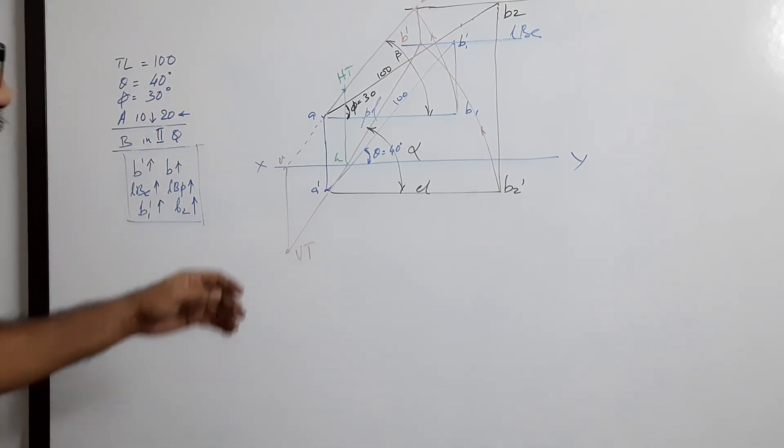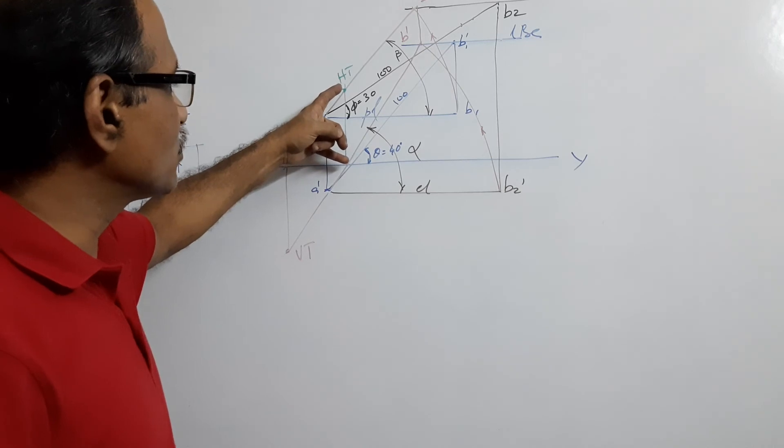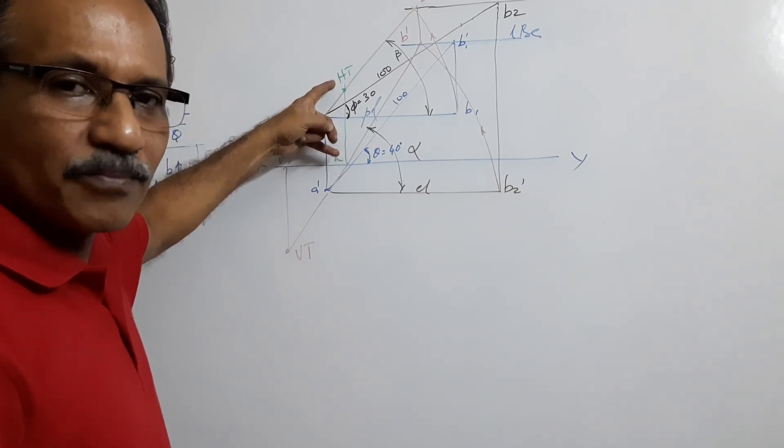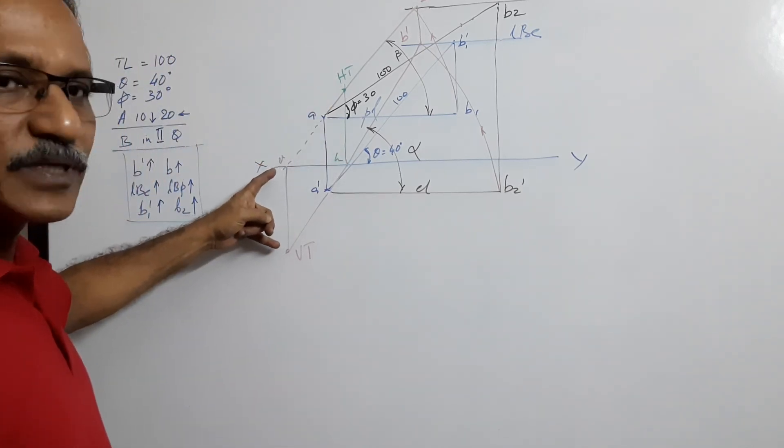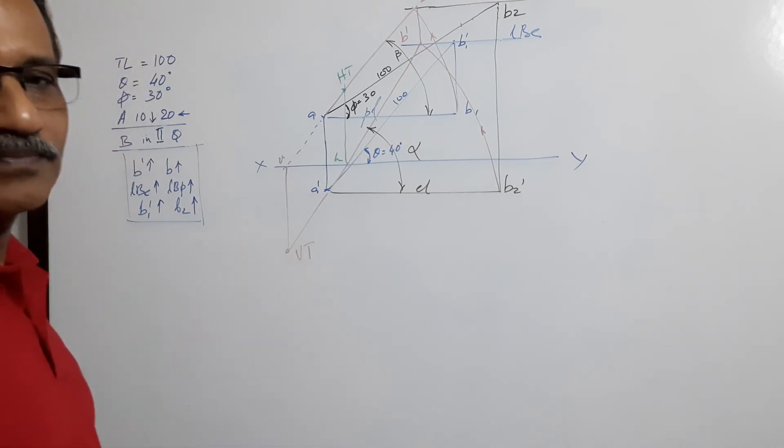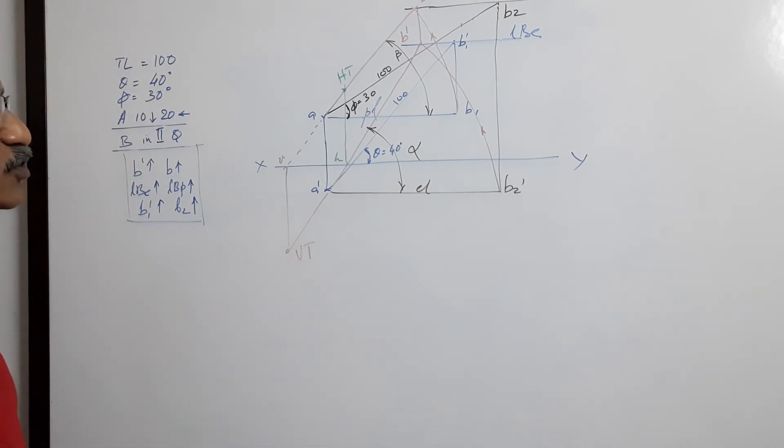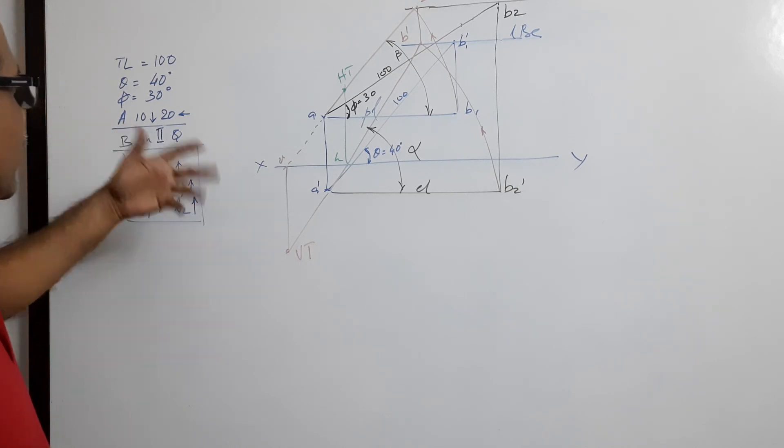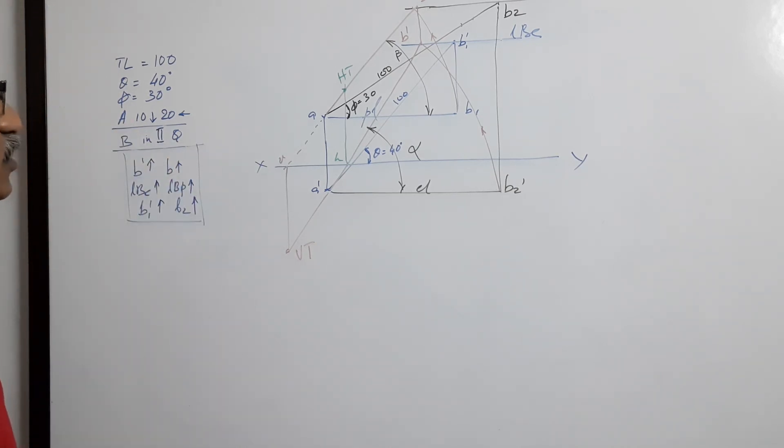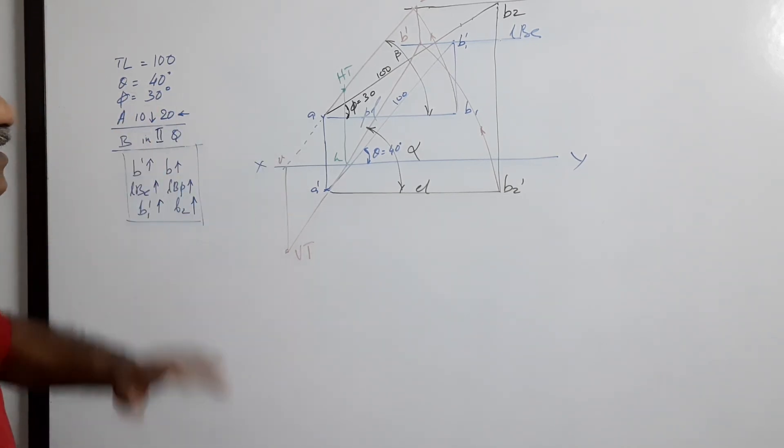What do you say as answers? HT is this much distance behind VP, and VT is this much distance below HP. That's the answer VT. You are located at all the values. You have drawn the projection and located the traces.